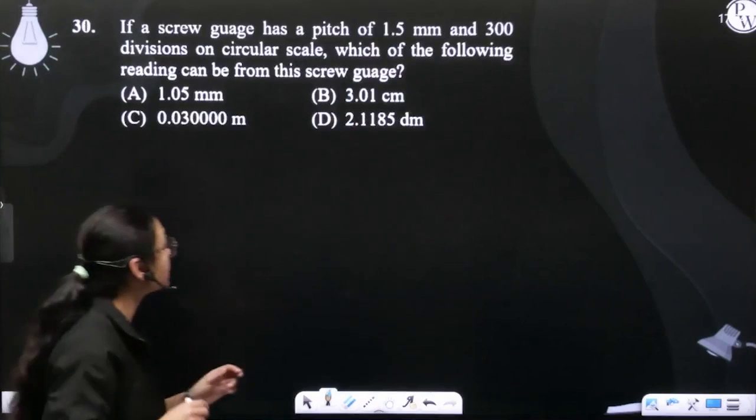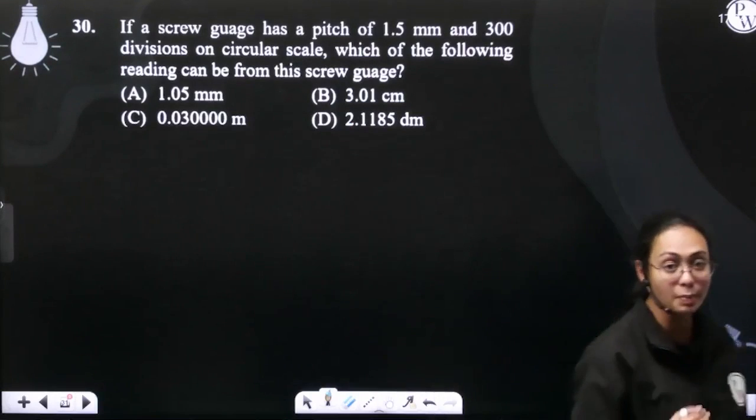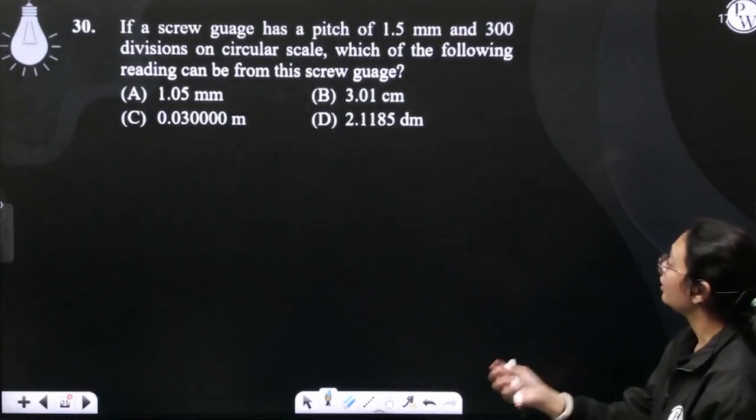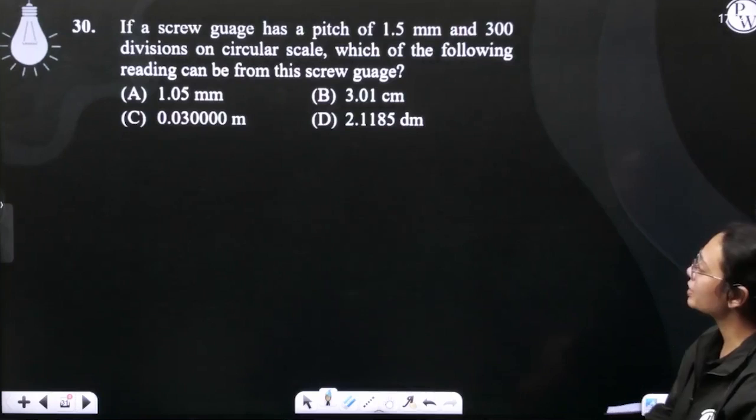Next question, if a screw gauge has a pitch of 1.5 mm, we have a pitch given and 300 divisions on circular scale, which of the following reading can be from this screw gauge?